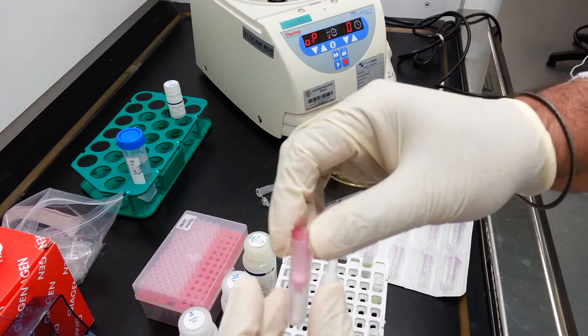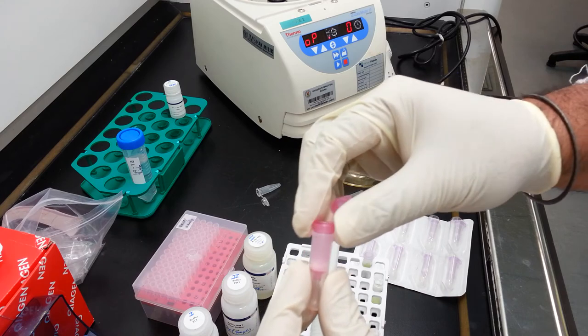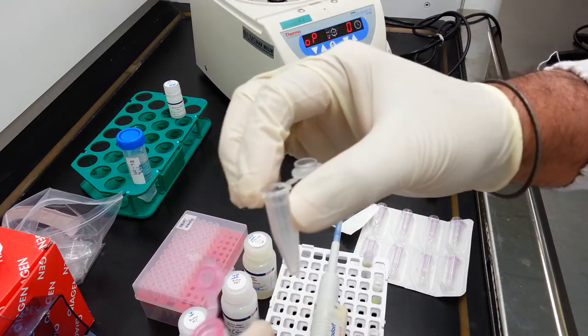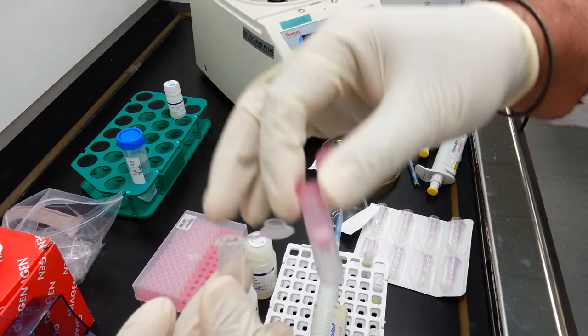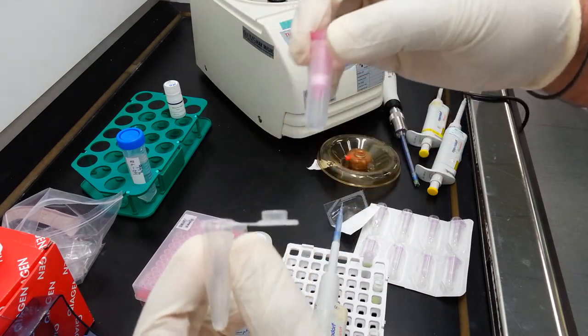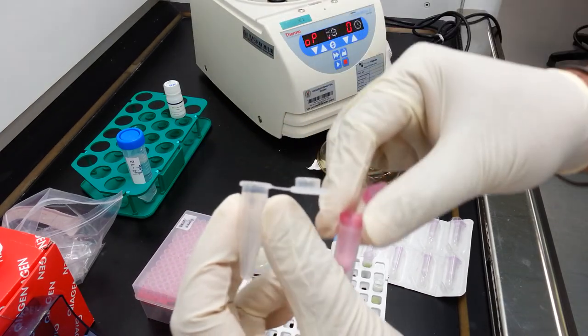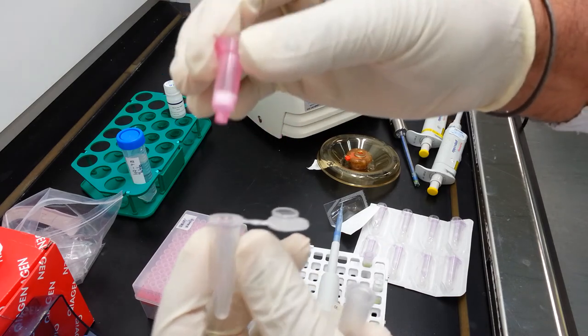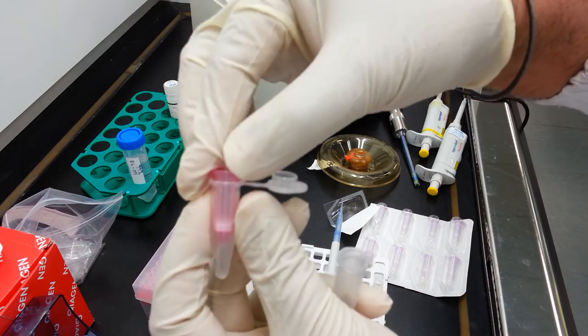The next step involves recovery of the RNA. In order to do this, use a fresh sterile centrifuge tube. In this case, it's a 1.5 ml eppendorf tube. Transfer the pink column into this tube.